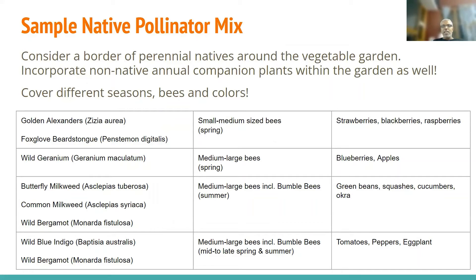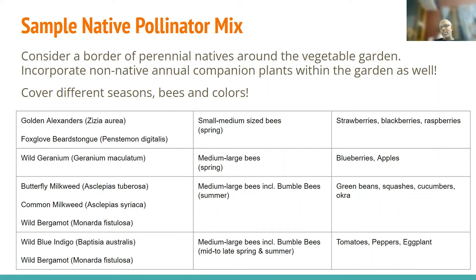We have a garden that BNI and many others from Planter Row will be working on at the Helen Keller Institute in Port Washington. In that garden where we grow vegetables, we are going to be planting a mix of native pollinators this season. The strategy we use covers different seasons — we want bees there in early spring, late spring, summer, and late summer — and a mix of colors, because at the end of the day we want it to look pretty as well. We picked golden Alexanders and foxglove beardtongue, which bring in small to medium sized bees in spring and will help with your strawberries, blackberries, and raspberries.